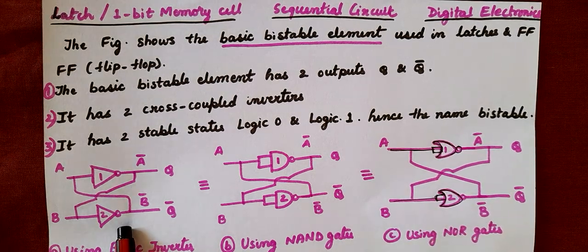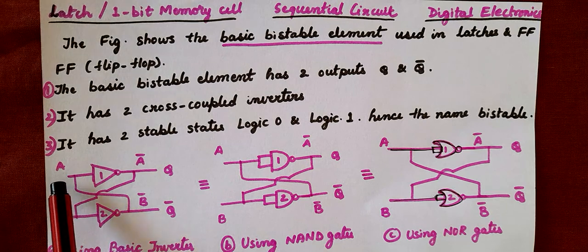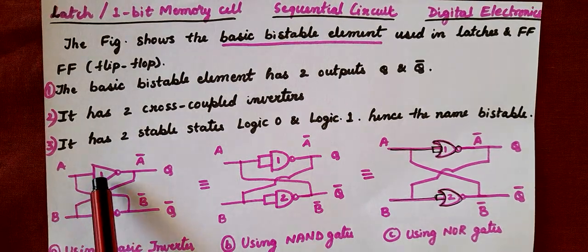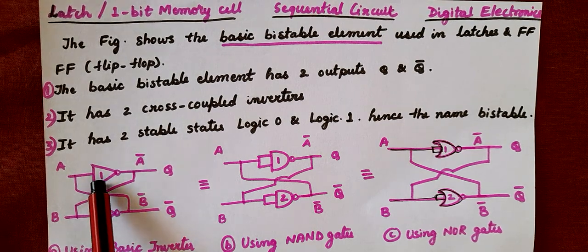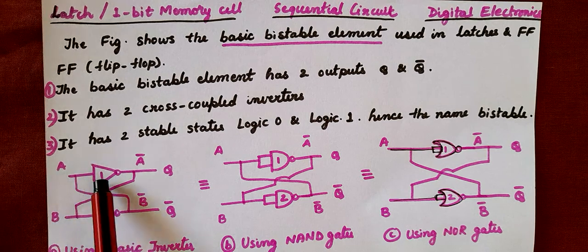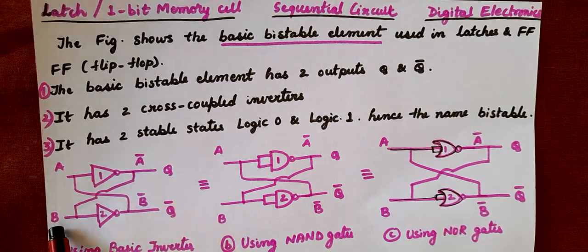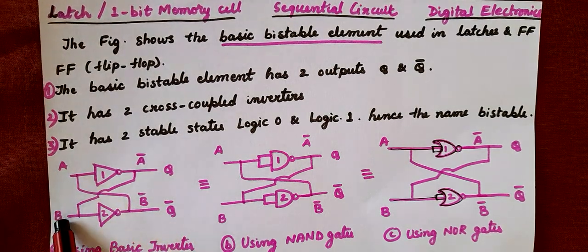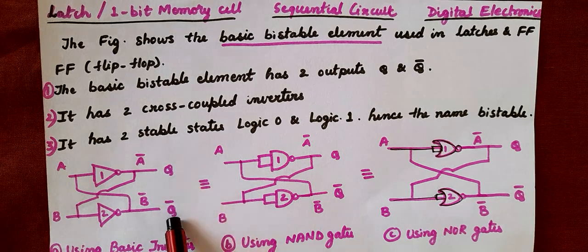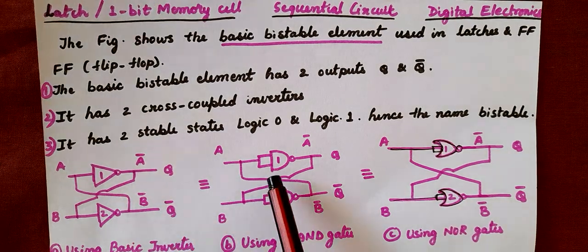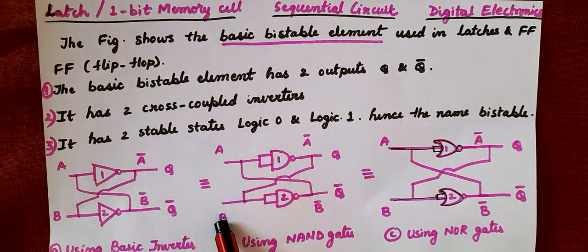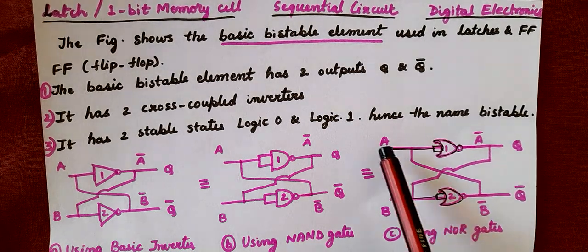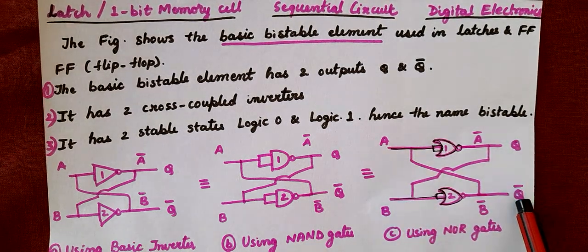Let us understand the first NOT gate. The output of this NOT gate A is given to another NOT gate, so the output will be A-bar. If B is the input to this NOT gate, the output will be B-bar. So A and B are the inputs, and Q and Q-bar are the outputs. Similarly, using a NAND gate, inputs are A and B, outputs are Q and Q-bar. Using a NOR gate, inputs are A and B, outputs are Q and Q-bar.